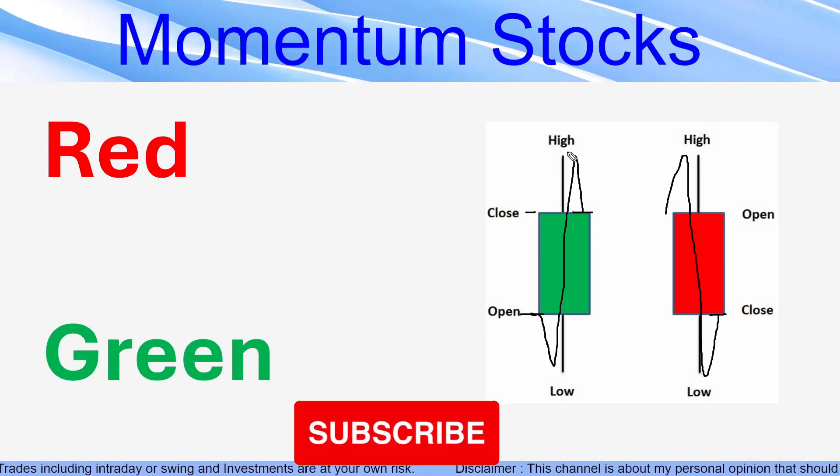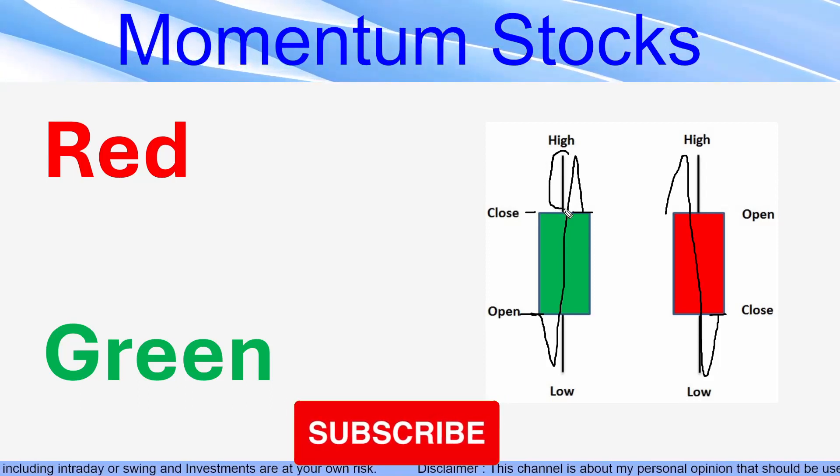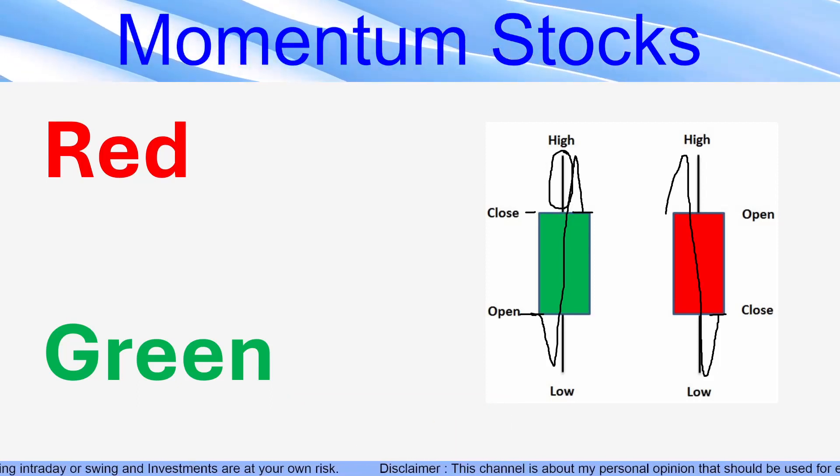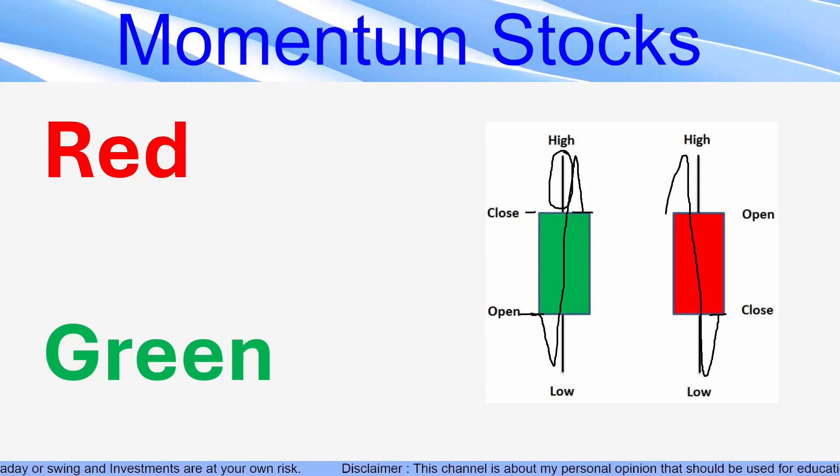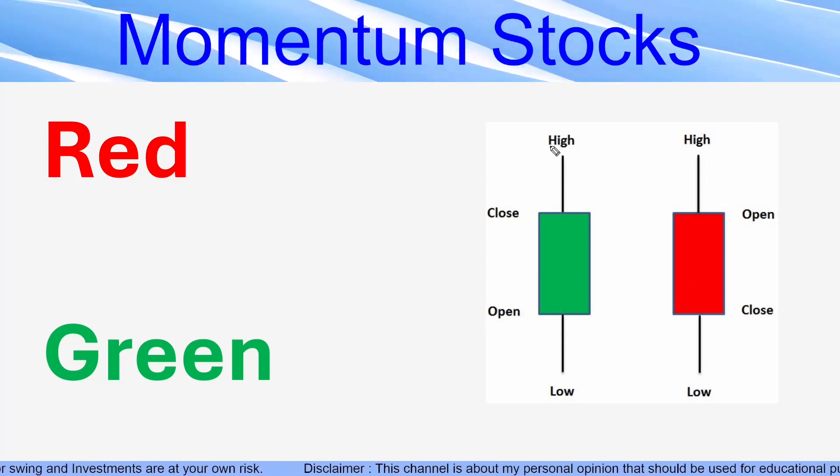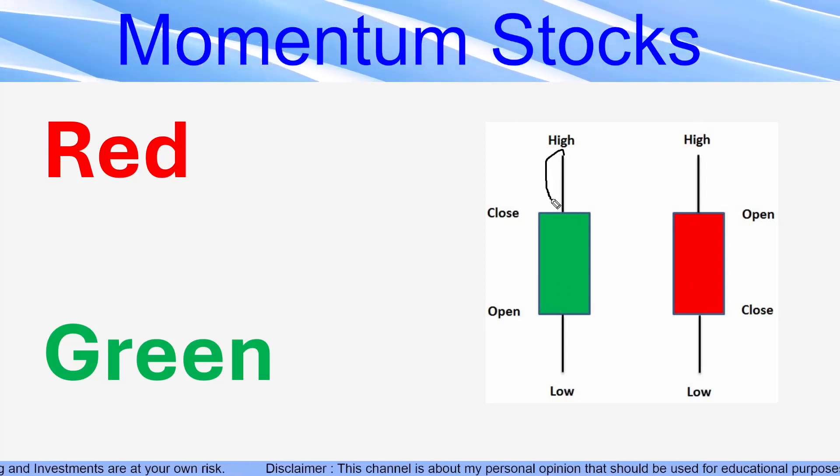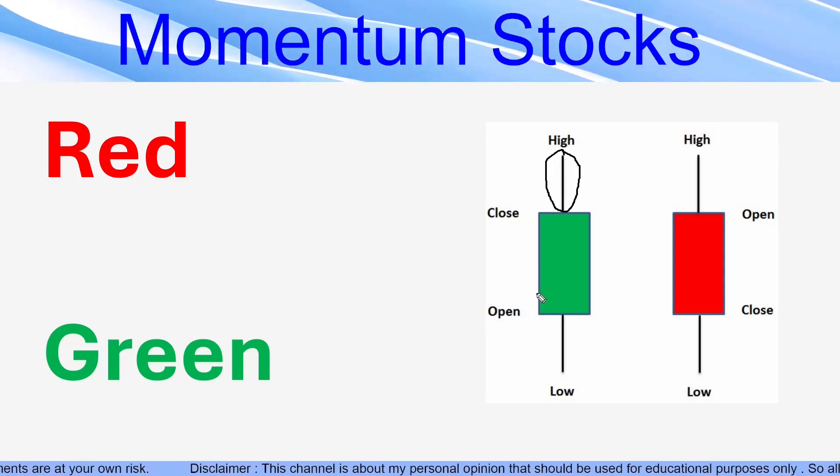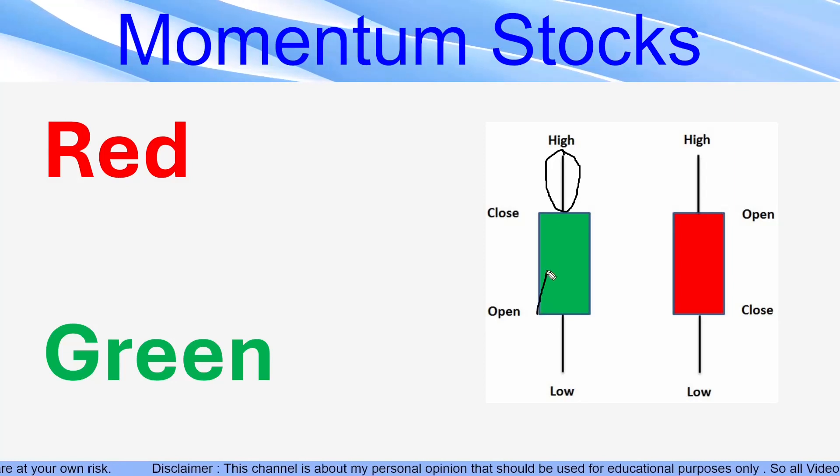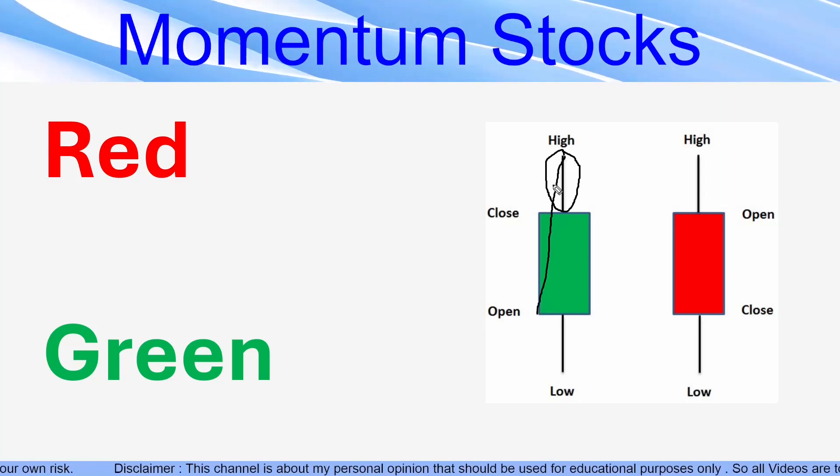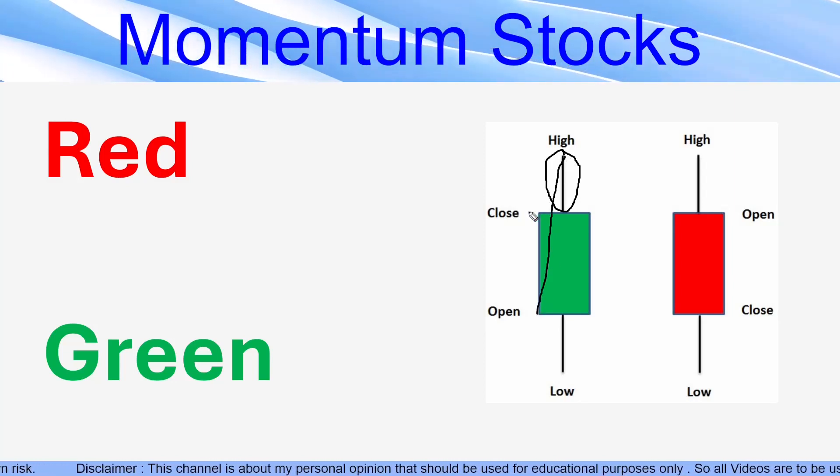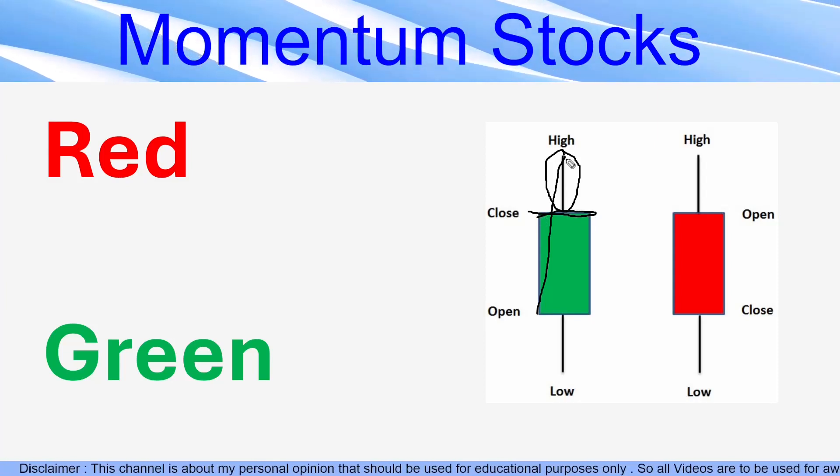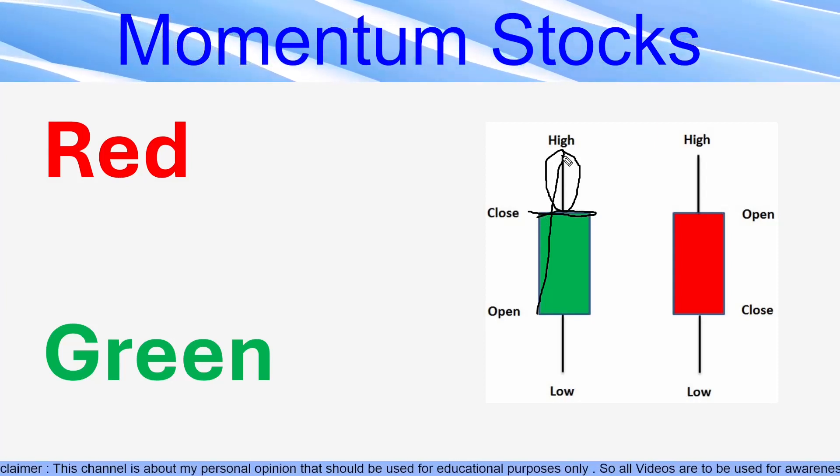What are these lines that it has made? This line and this line. This is an important thing. Listen to this part carefully. This is called a shadow or a wick, meaning stock started its journey here, went till this area. But during the entire interval of time, it could not maintain these levels.